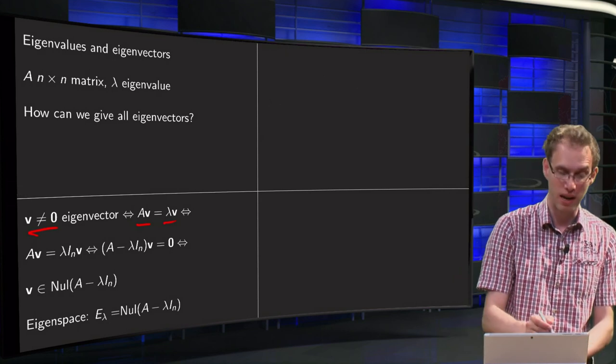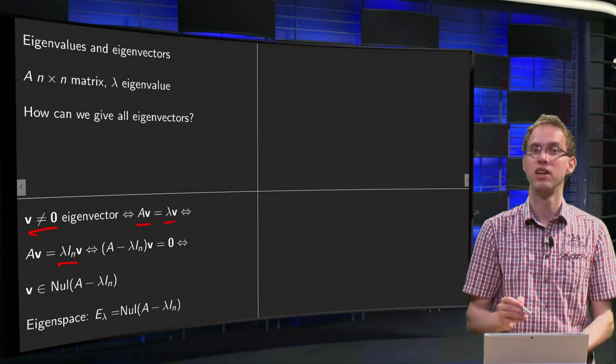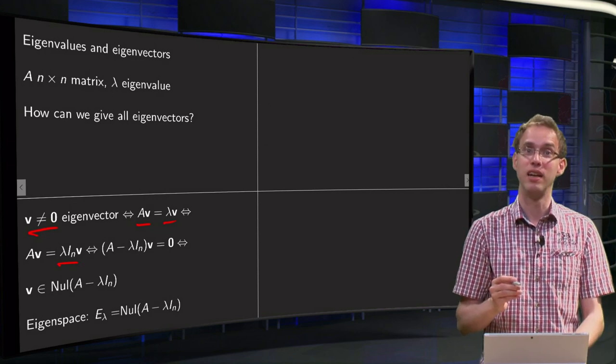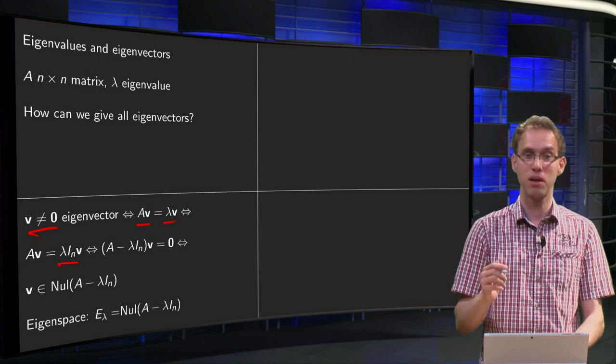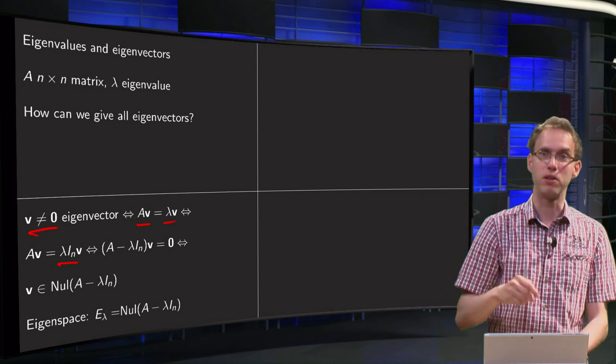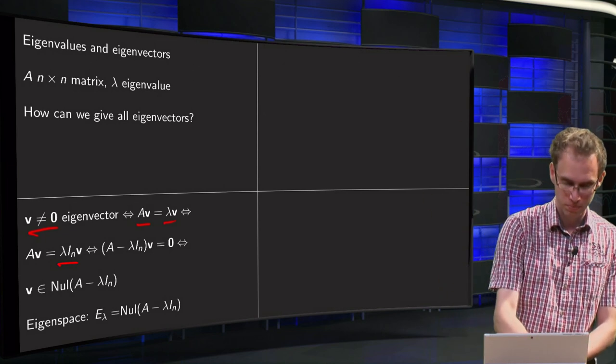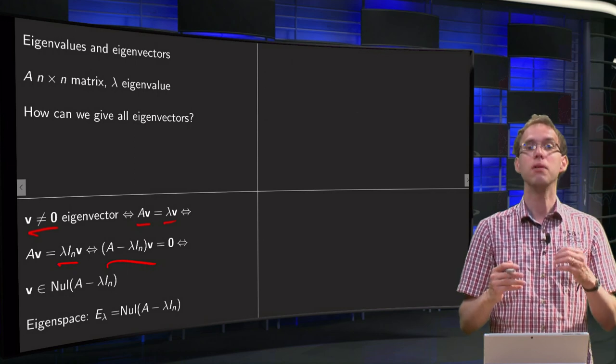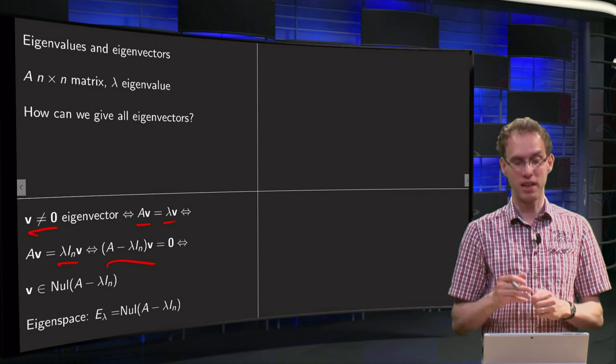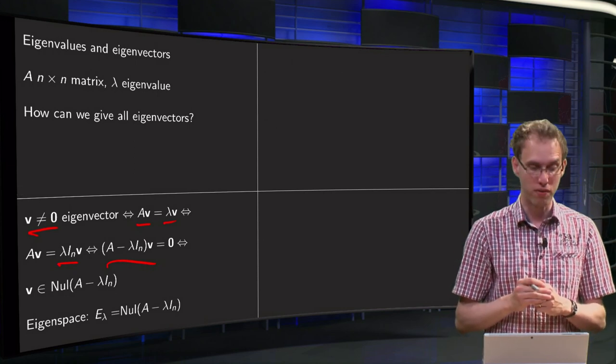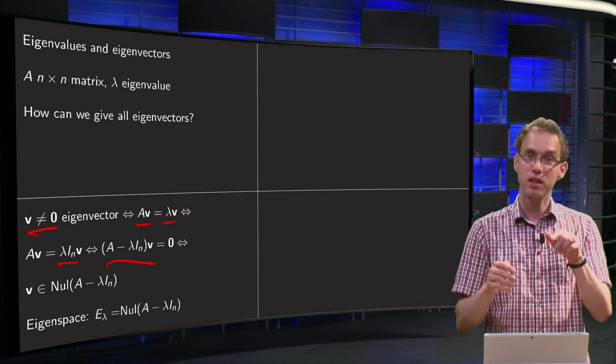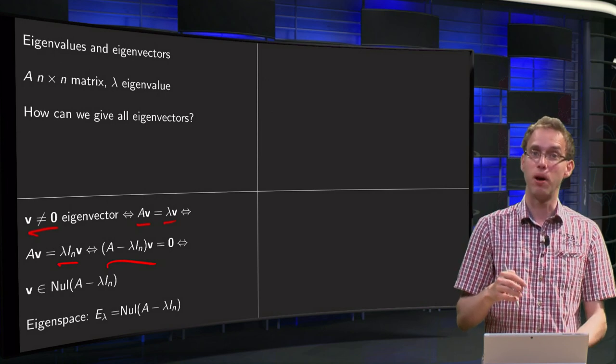We insert the n by n identity matrix on the right hand side, so A times v equals lambda times identity matrix times v, then we take that part to the left. So we get A minus lambda times identity matrix times v equals the zero vector.